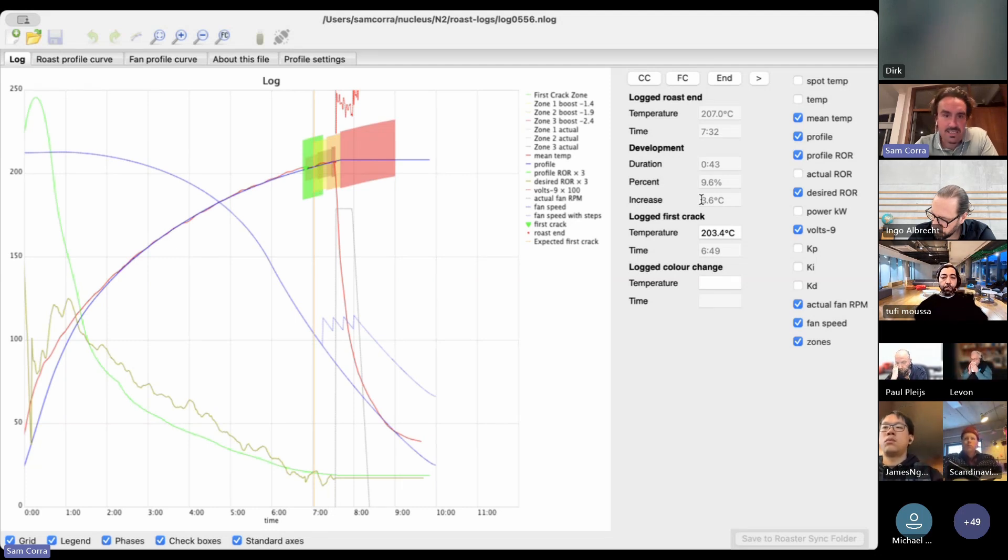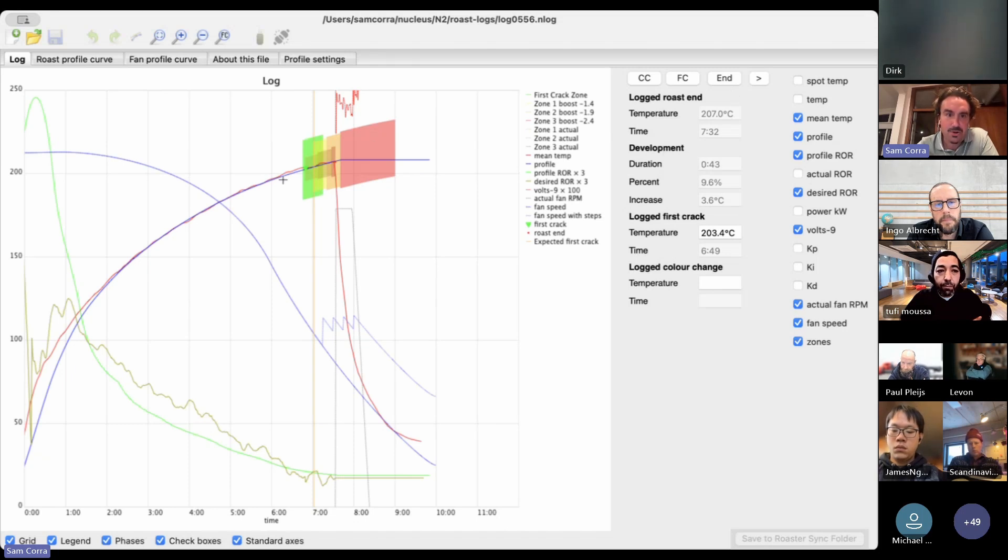You've already got a great starting point for drop temperature, turning point, how to manage the heat application throughout the roast, but also at the start of the roast. I just want to mention it's really important that you don't directly look at these number points.